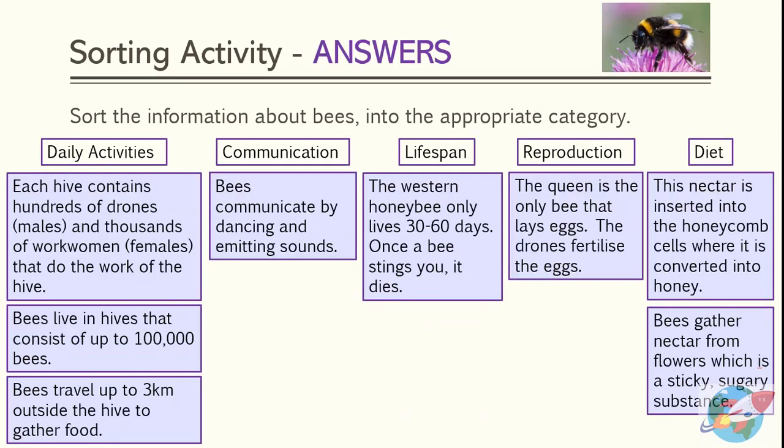Welcome back. Here are the answers to our sorting activity. Daily activities: each hive contains hundreds of drones (males) and thousands of worker bees (females) that do the work of the hive; bees live in hives of up to 100,000 bees; bees travel up to three kilometres outside the hive to gather food. Communication: bees communicate by dancing and emitting sounds. Lifespan: the western honeybee only lives 30 to 60 days; once a bee stings you, it dies. Reproduction: the queen is the only bee that lays eggs; the drones fertilise the eggs. Diet: this nectar is inserted into the honeycomb cells where it is converted into honey; bees gather nectar from flowers, which is a sticky, sugary substance.